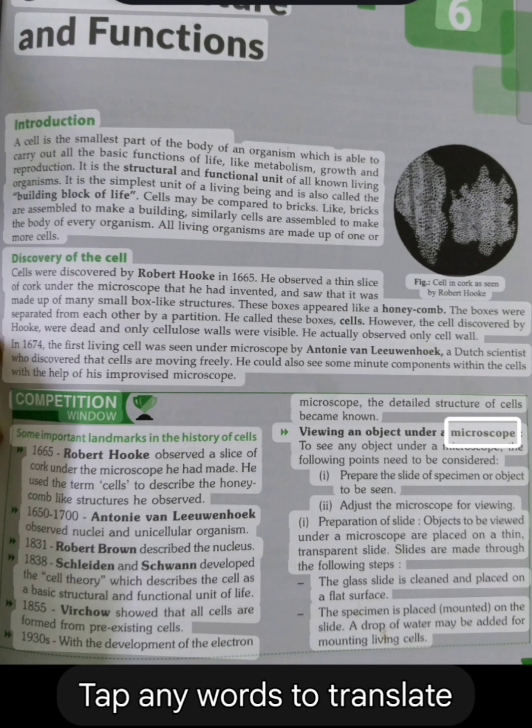Viewing an object under a microscope. To see any object under a microscope, the following points need to be considered: I. Prepare the slide of specimen or object to be seen. II. Adjust the microscope for viewing. I. Preparation of slide: Objects to be viewed under a microscope are placed on a thin, transparent slide. Slides are made through the following steps.